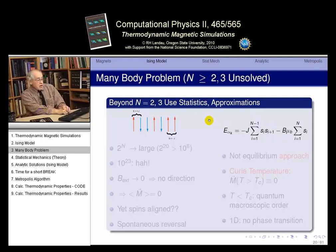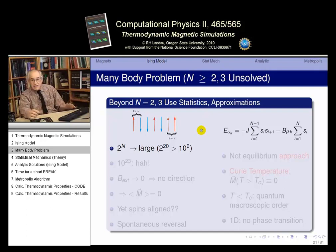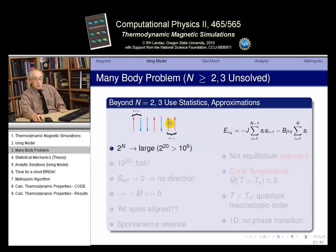We can simulate the Ising model on the computer with any number of particles. In practice, if we want this to be a model of nature, we want N to be something like Avogadro's number of atoms. But 2^N is a very large number. Even when N is just 20, you have more than a million possible spin state vectors — that's hard to track on the computer. If you try to do 10^23, forget it.